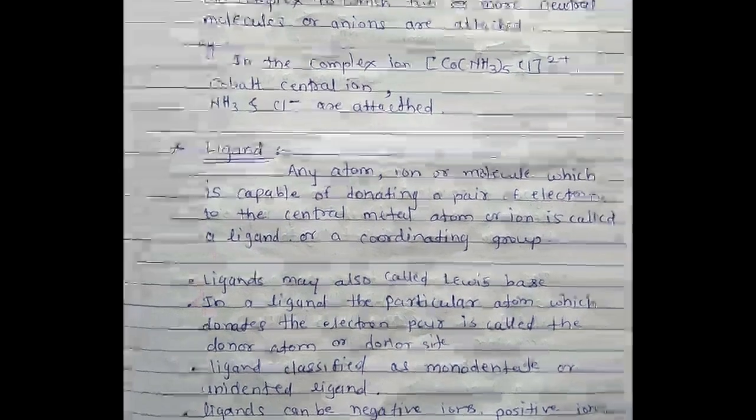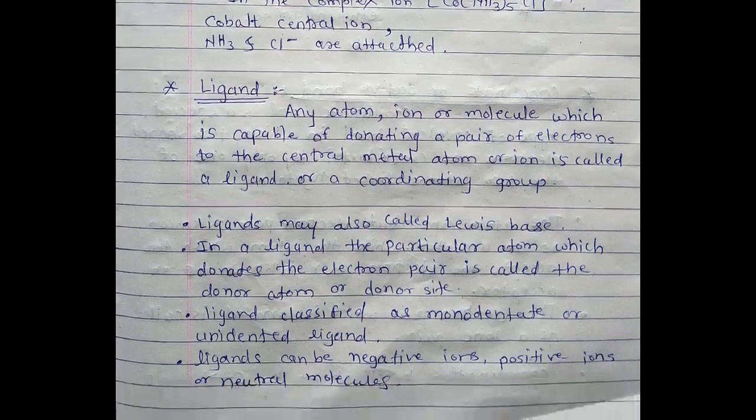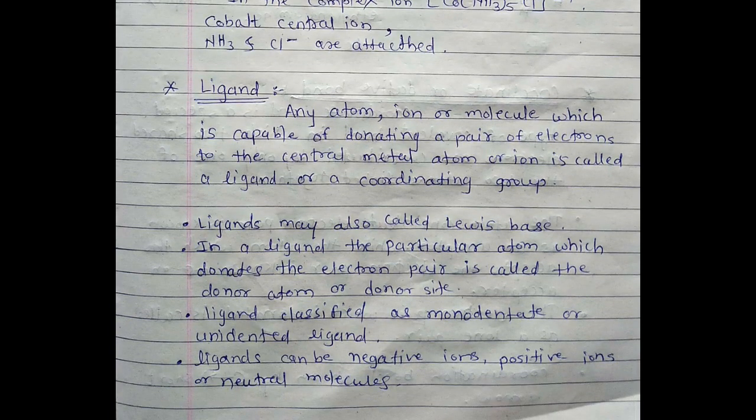Next, ligand. Any atom, ion, or molecule which is capable of donating a pair of electrons to the central metal atom or ion is called ligand or coordinating group.